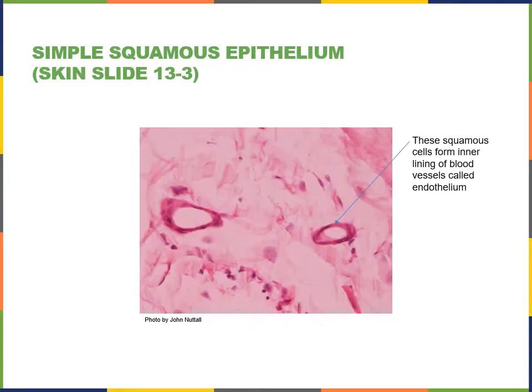Here is an example from a section of the skin, from the cutaneous membrane. We're focused on part of the dermis, the connective tissue underlying the epithelium of the epidermis. In the dermis there are numerous blood vessels, and the inner lining of the blood vessel — the endothelium — is formed from a simple squamous epithelium. The function is to allow the diffusion of nutrients and waste across the blood vessel lining.